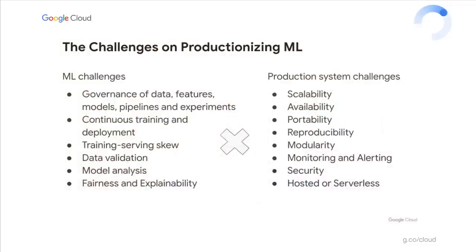But it's not as simple as just bringing DevOps practice into the machine learning system. The DevOps problems could solve challenges like scalability, availability, and portability. But in machine learning systems, you always have to think about challenges unique to machine learning, such as the governance of data, features, models, and pipelines. As long as you are sharing the same features, models, and pipelines with many stakeholders or teams, you always have to think about governance and auditing of those artifacts. That is a unique problem for machine learning.